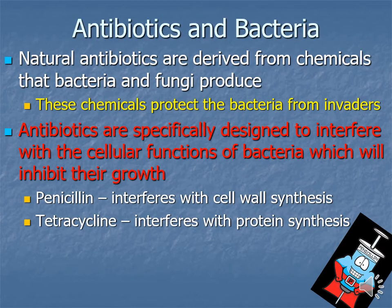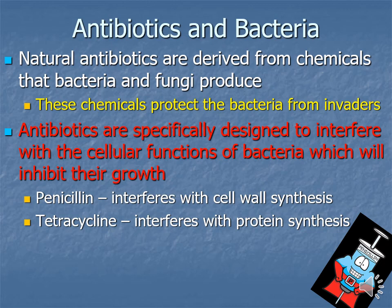Antibiotics work only on bacteria — not viruses. Natural antibiotics are derived from chemicals that bacteria and fungi produce to protect themselves. Lab-designed antibiotics interfere with bacteria's cellular functions to inhibit reproduction. Penicillin interferes with the bacteria's ability to make a cell wall, making it easier for your immune system to kill them. Tetracycline interferes with protein synthesis — if bacteria can't make proteins they can't reproduce, giving your immune system a chance to kill off the population before it grows too large.